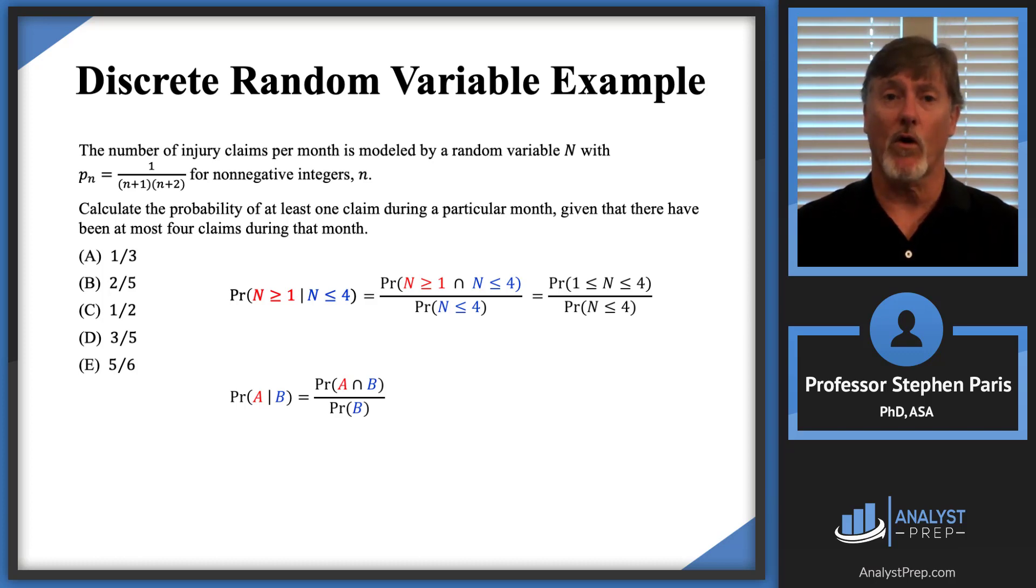And the denominator is just the probability that N ≤ 4.